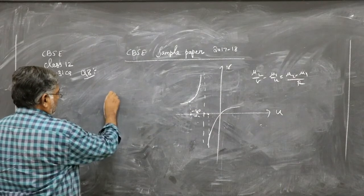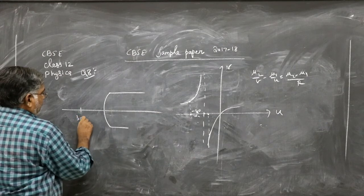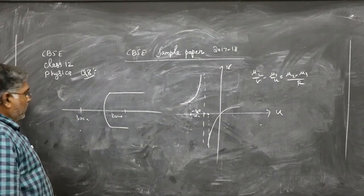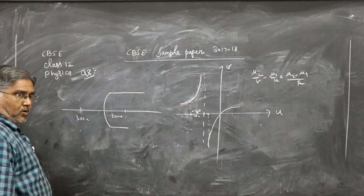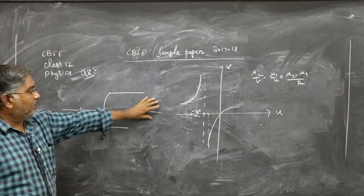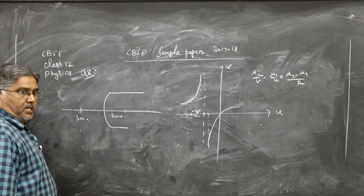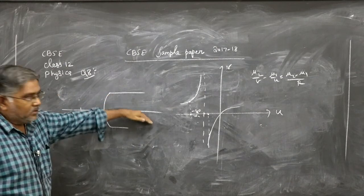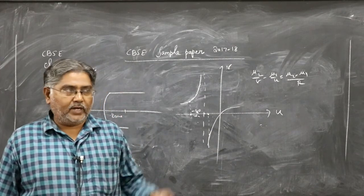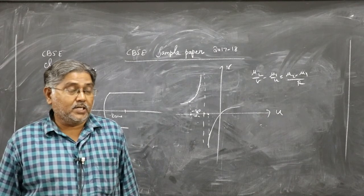To summarize: if the object is at 30 cm, the image is formed on the left side (virtual). If the object is at 40 cm, the refracted ray goes parallel and the image is at infinity. If the object is more than 40 cm away, the rays converge and the image is formed on the principal axis to the right side of the convex surface — a real image. Analyzing this problem gives a lot of useful insight.